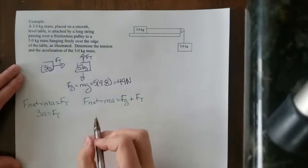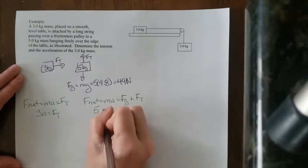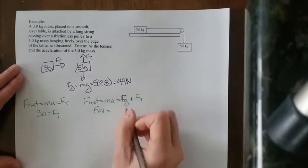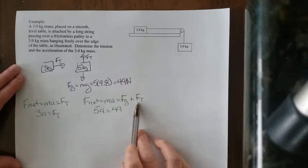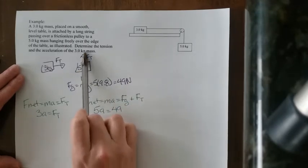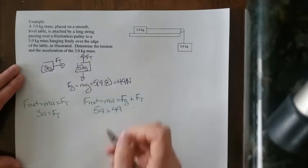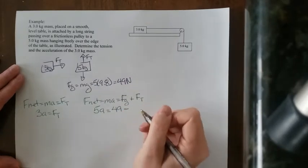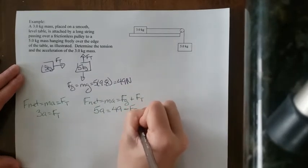Write down what you know. I know the mass. The mass is 5. So it'll be 5A is equal to force of gravity is 49. Now tension is in the opposite direction of gravity. So because it's in the opposite direction, I need to make it minus. So minus the force of tension.